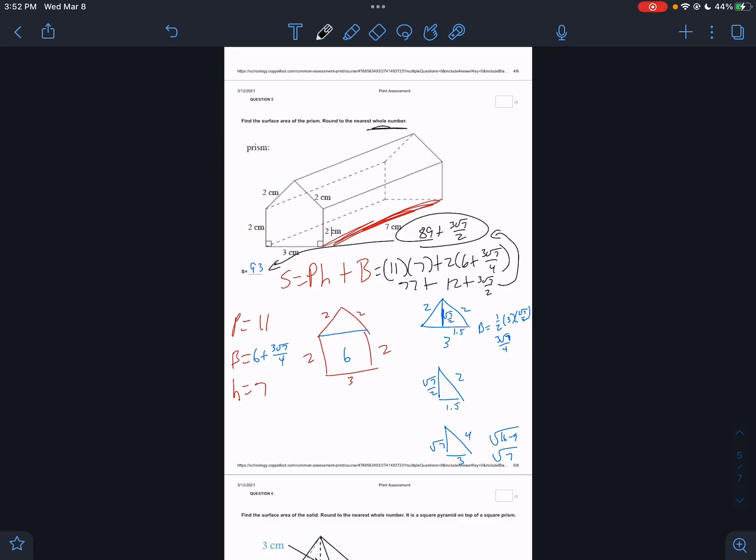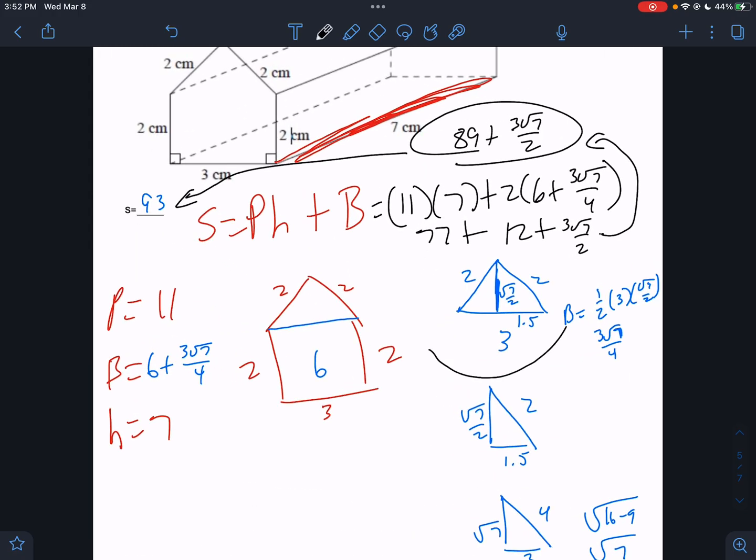Round to the nearest whole number would be 93. So I treated it like a prism. I just did the perimeter of the base times the height plus the area of the base. But to get the area of the base, you had to work on a funky triangle. It happens sometimes.